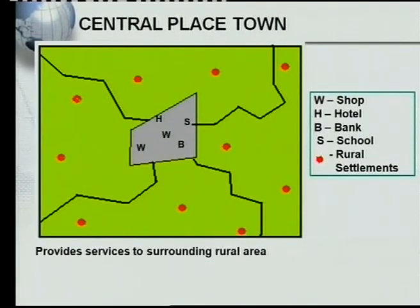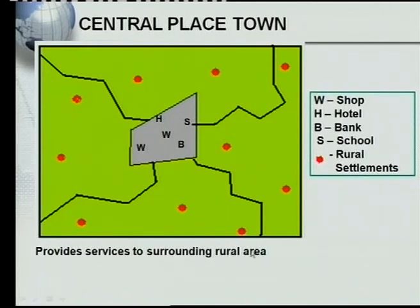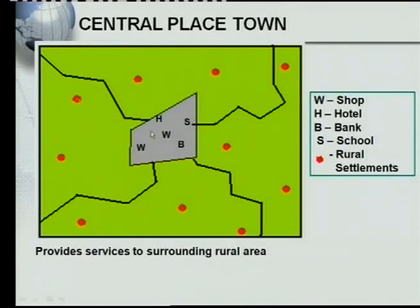The first type of urban settlement you should know is a central place town. Looking at this diagram, the surrounding rural area is shown in green, and the red represents the rural settlements. The farming community in the rural settlements will need a shop, a school, a bank — so they travel from the rural area to the central place town. That is why a central place town provides services to the surrounding rural area.